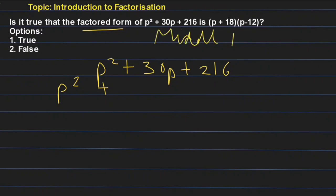Middle term splitting, because in this case you generally split the middle term. So you have 30p equals 18p + 12p. Now you see 18 + 12 is 30 also.